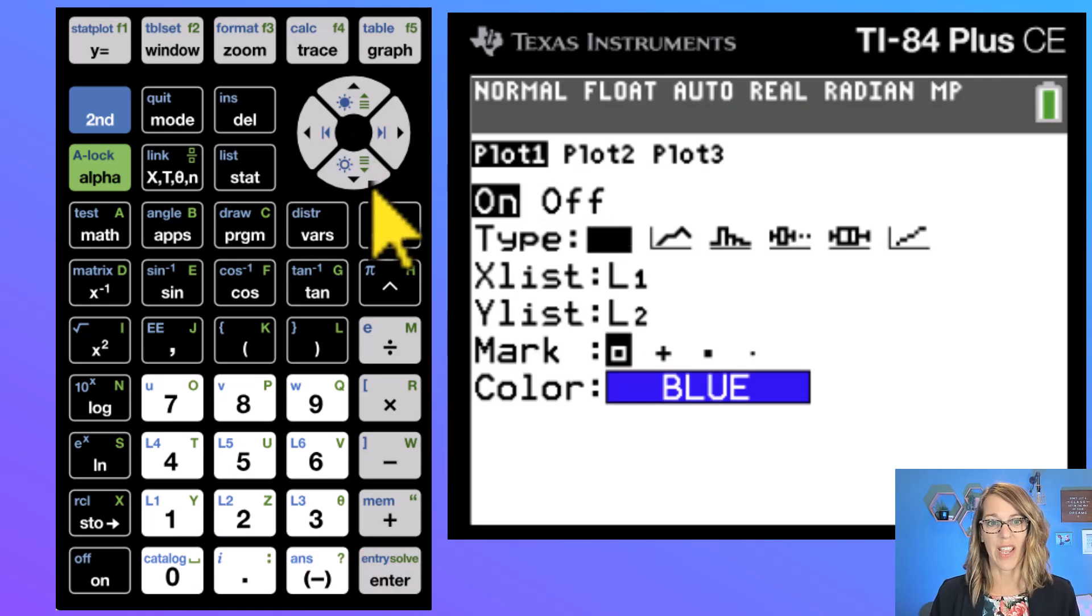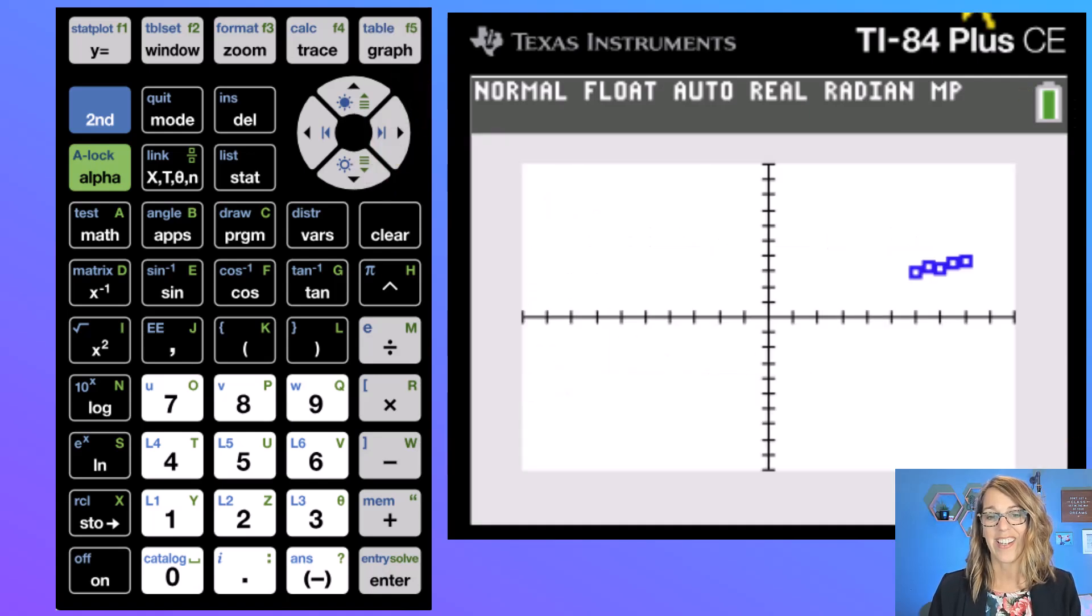Now I can also change the chart type but I do want a scatter plot. I want to make sure that I've got my hours of sleep as my x list and that's L1 perfect, and GPA as my y list which is L2, that's also perfect. You can change what that marker is. I'm just going to leave it and I want to graph this. So I hit my graph button and they're all kind of clustered over here.